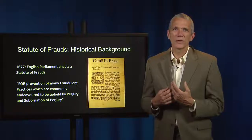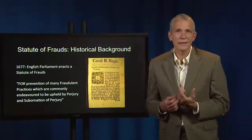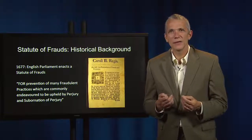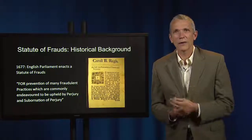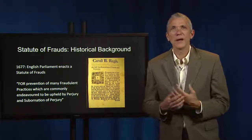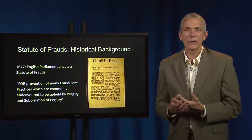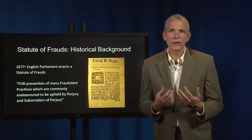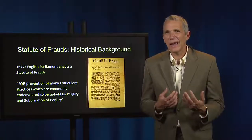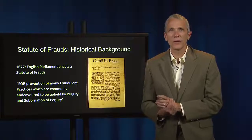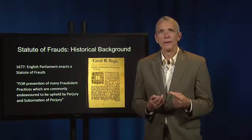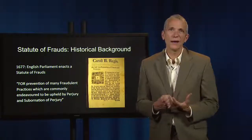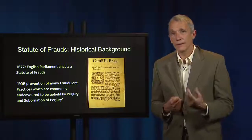This kind of false claim was particularly pernicious because in England at the time of the statute's enactment, interested parties to litigation — that is, the parties who had a real stake in the outcome of the lawsuit, the plaintiff and defendant — were not permitted to testify in court. If A claimed that B agreed to sell him a plot of land and then breached their contract, then neither A nor B could testify about the alleged agreement. To combat this phenomenon, the Act for Prevention of Frauds and Perjuries required that certain kinds of contracts had to be in writing and signed.